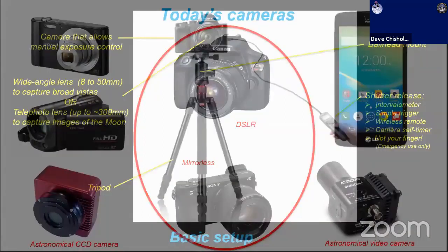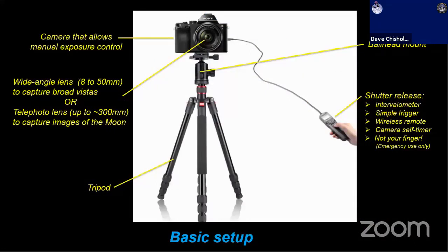The very basic, minimal setup that you need to get started in astrophotography is essentially a camera that allows you to do full manual exposure control, like a DSLR. The advantage with the DSLR is that you have interchangeable lenses. You can attach a wide angle lens for broad vistas like nightscapes, or telephoto lenses for close-ups of the moon and other larger scale phenomena. You need a sturdy tripod, a ball head mount so you can aim your camera, and you need a shutter release. The thing you want to avoid with astrophotography is touching the shutter button on your camera because you're going to wind up jiggling your image.